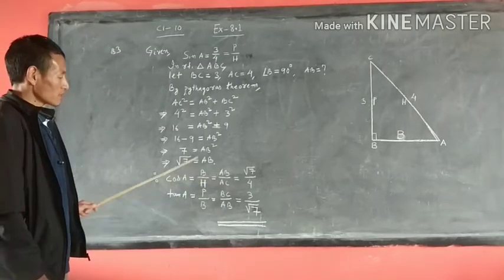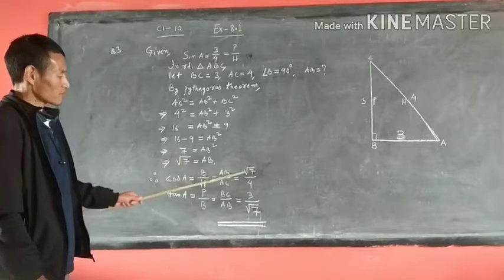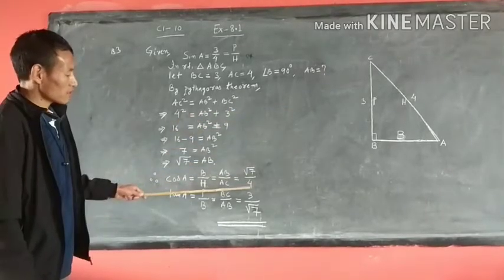So base AB is root 7, and hypotenuse AC is 4. Therefore cos A equals root 7 over 4.